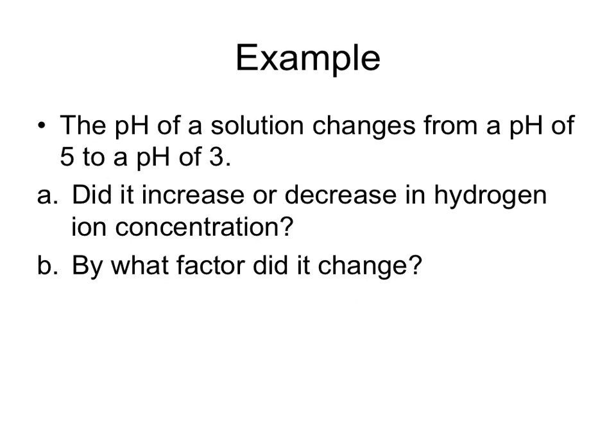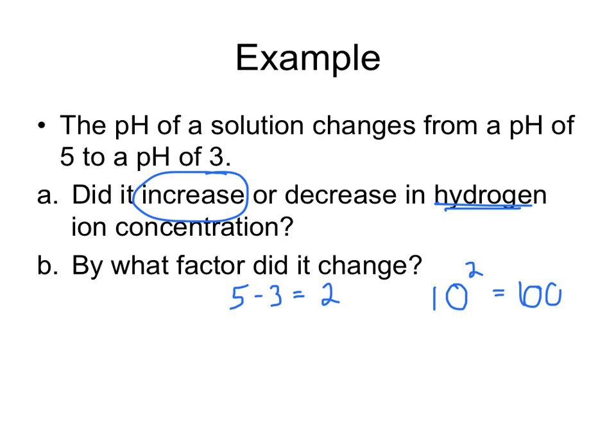Let's try this example out. The pH of a solution changes from 5 to 3. Did it increase or decrease in hydrogen ion concentration, and by what factor did it change? We know as we decrease in pH, we're becoming more acidic, and when we become more acidic, that's going to increase the number of hydrogen ions. The difference is 5 minus 3, which is 2, and every unit change of 1 is 10 times, so 10 to the second would be 100 times.